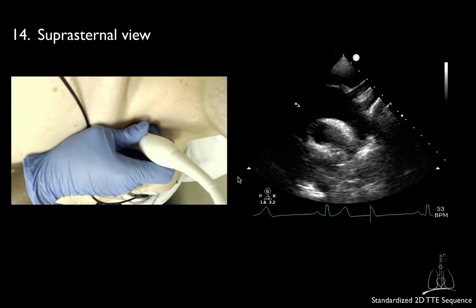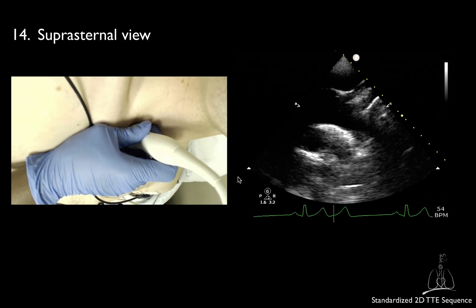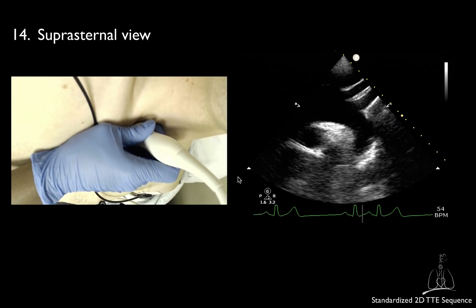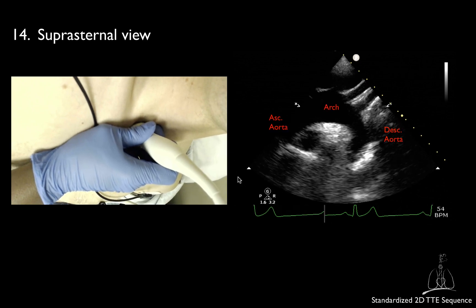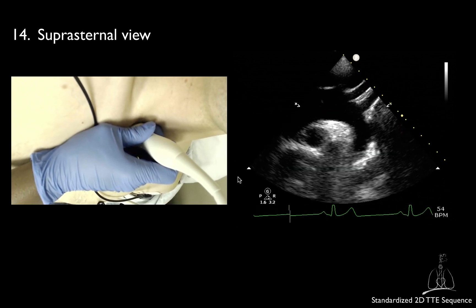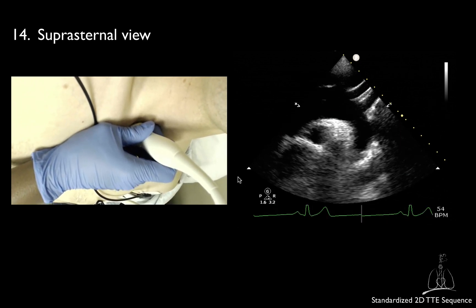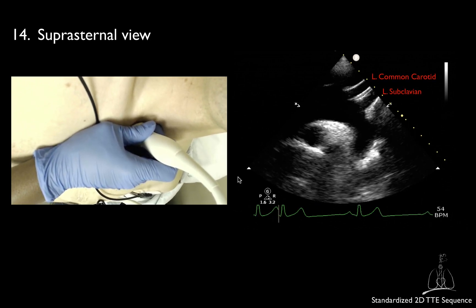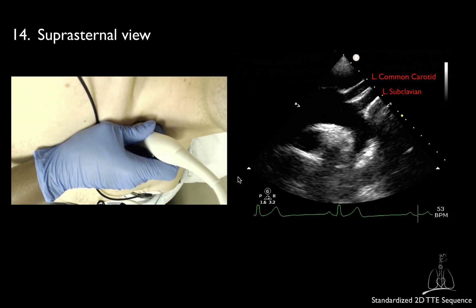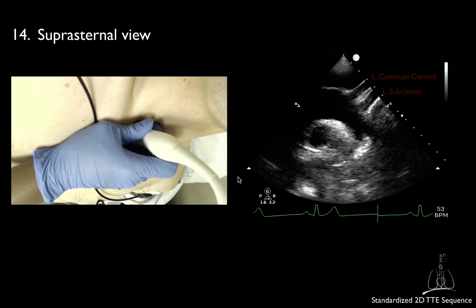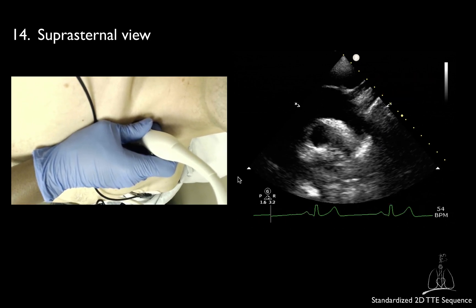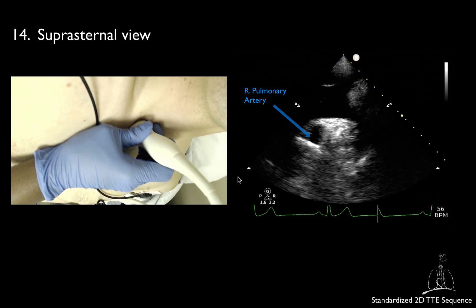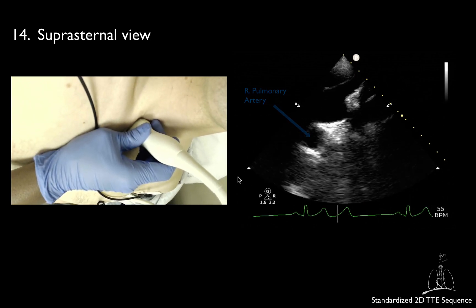The final step of the transthoracic examination is the suprasternal notch view, with identification of the long axis of the ascending aorta, the aortic arch, and the beginning of the thoracic descending aorta. Often, the brachiocephalic, left common carotid, and subclavian arteries can be identified. Finally, the short axis of the right pulmonary artery can be identified below the aortic arch.